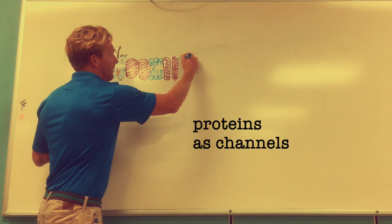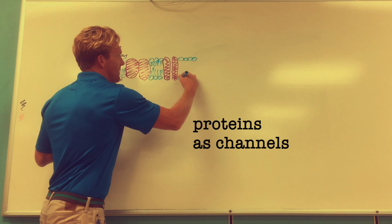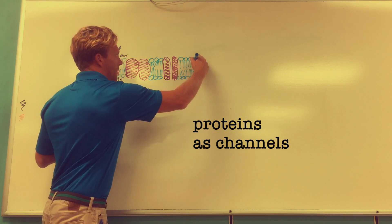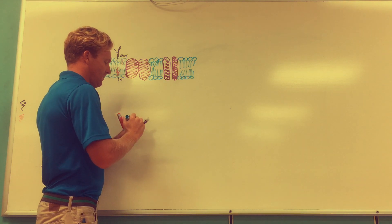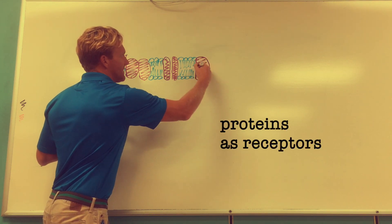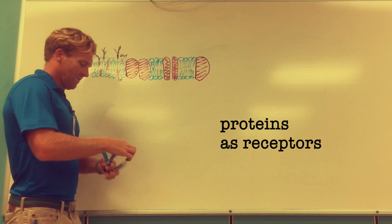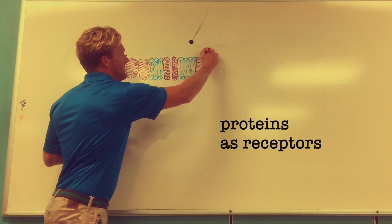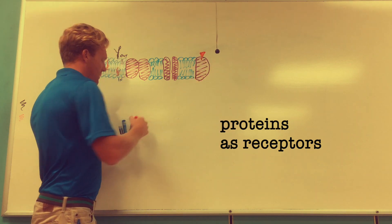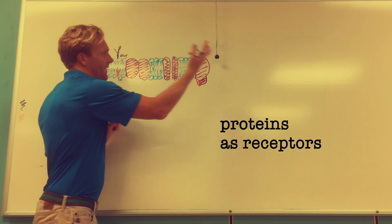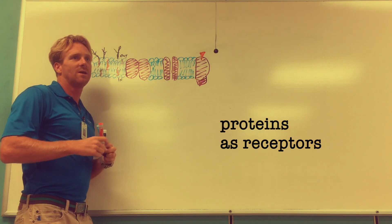Another role of some of these transmembrane proteins is to receive a signal which causes a change in the behavior of this cell. This protein could receive a chemical signal like a hormone. A hormone could bind onto this protein and that would cause it to change shape, which could kickstart a chemical reaction on the interior of the cell.